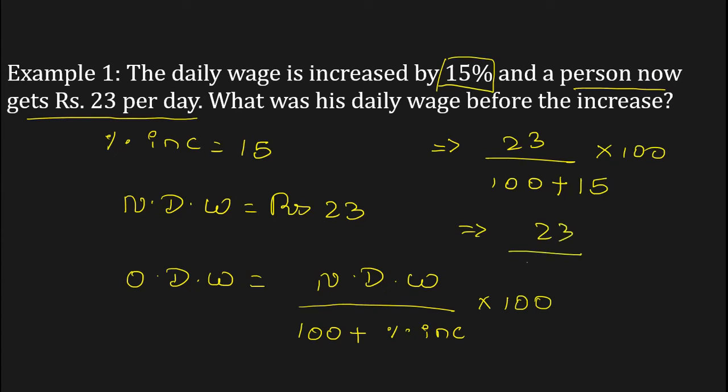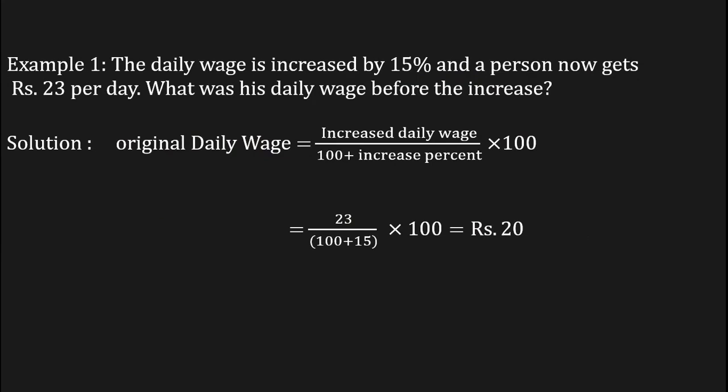Solving this gives 23 upon 115 into 100 equals 20 rupees. So 20 rupees is the daily wage before increase. In this way you can solve the given problem.